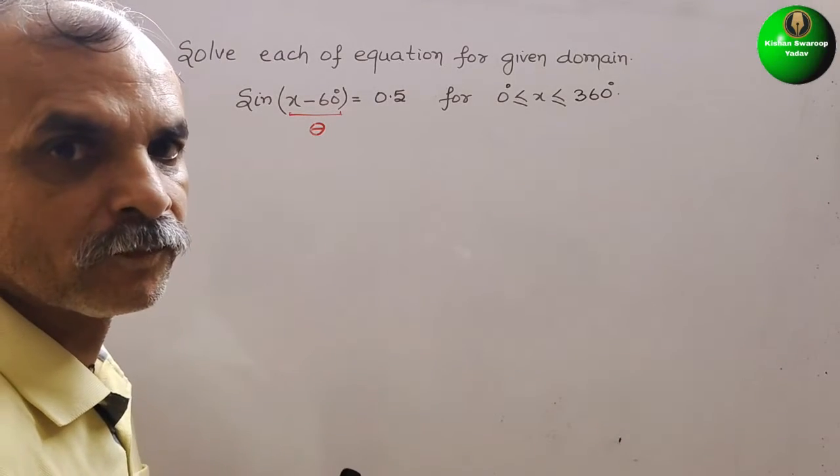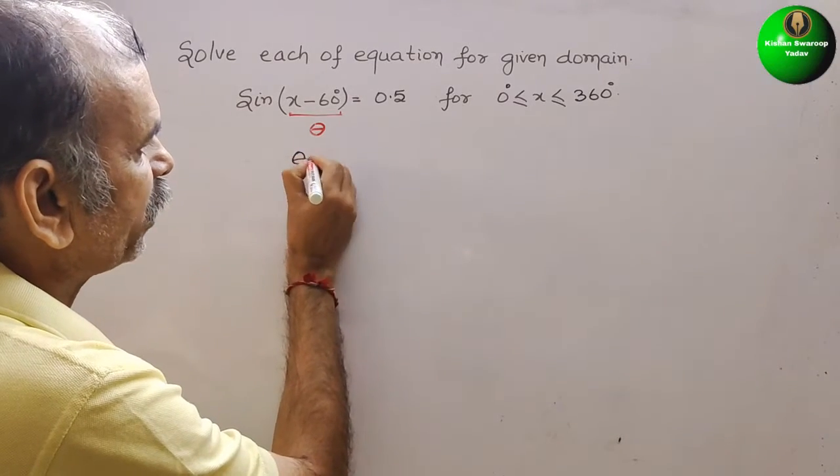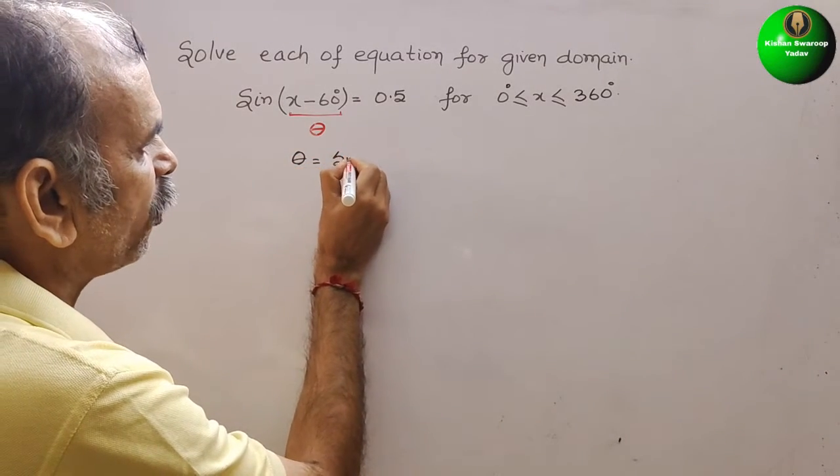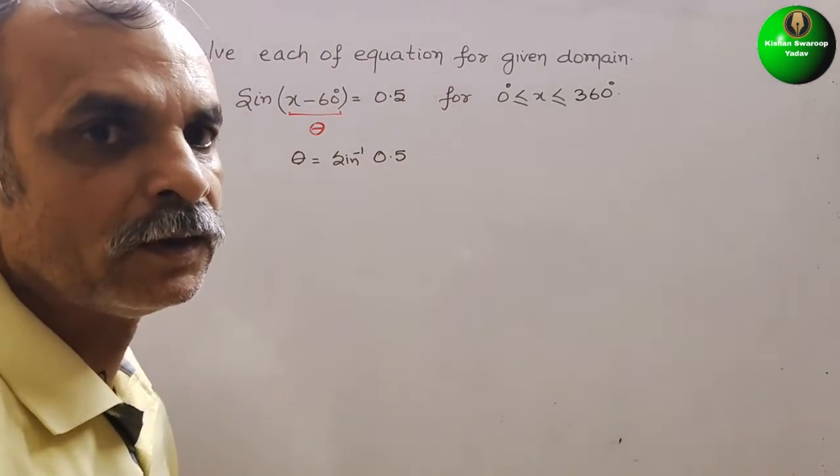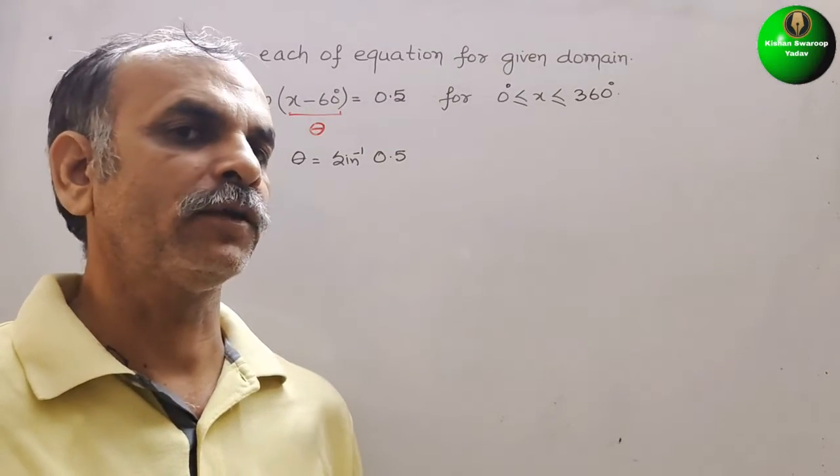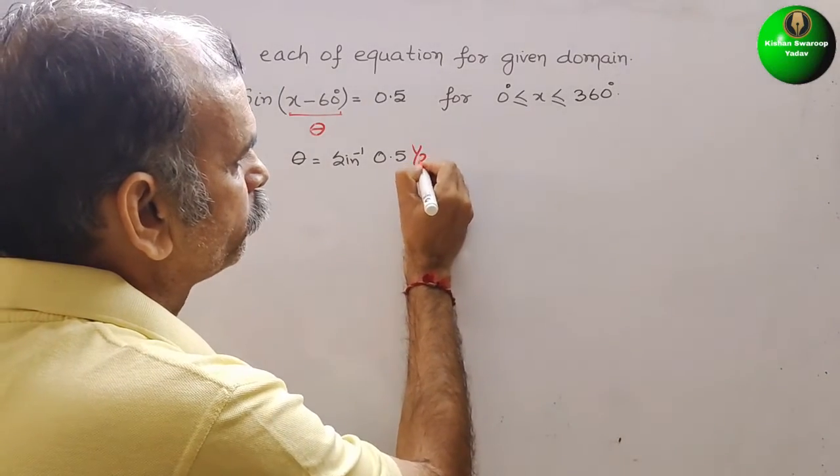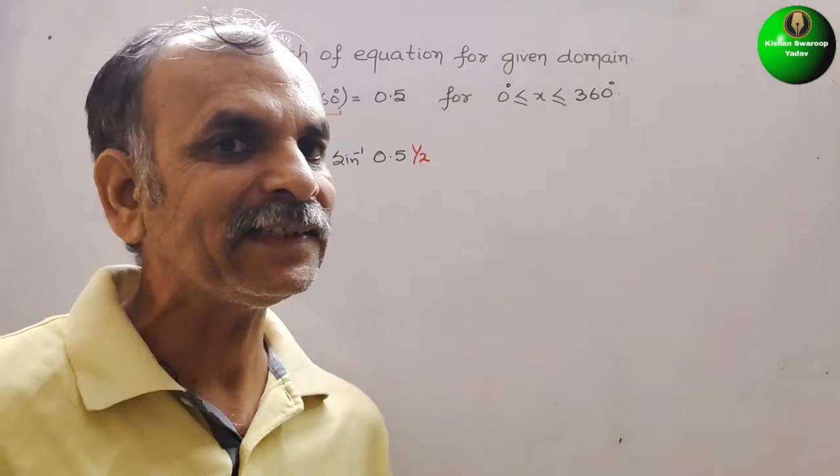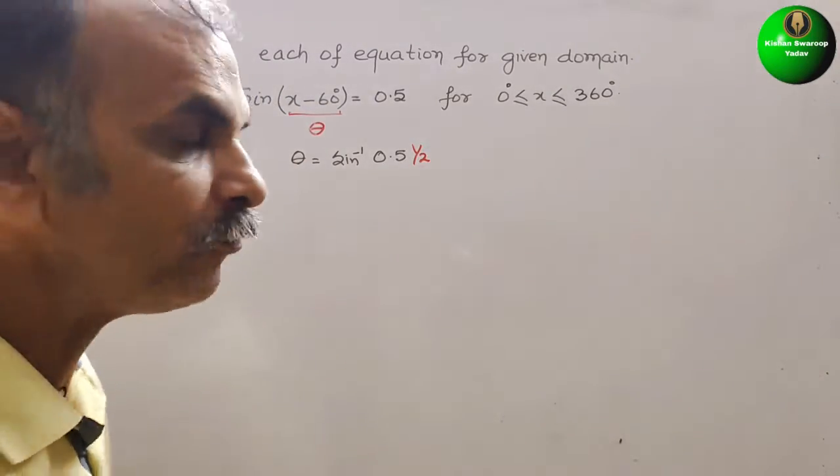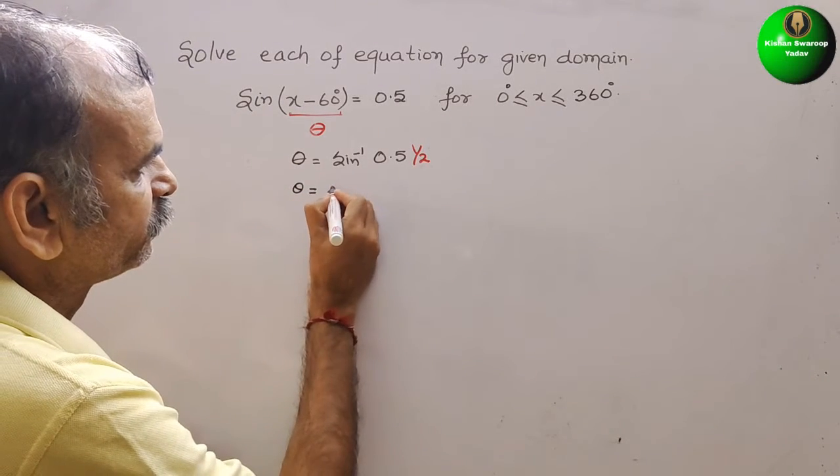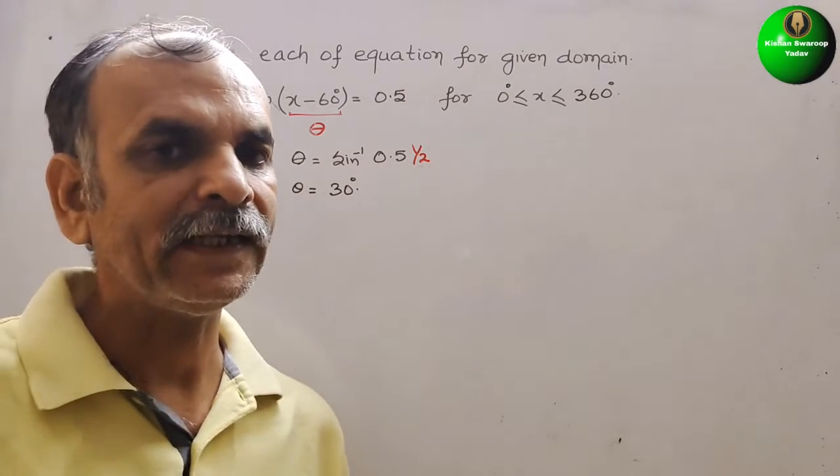So now what is your theta? We can say theta is nothing but sine inverse of 0.5. 0.5 means what? 1 by 2. So we know that in sine table, 1 by 2 means 30 degrees, so we can say theta is 30 degrees.